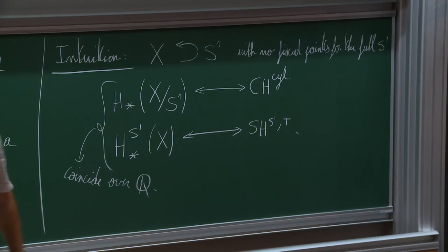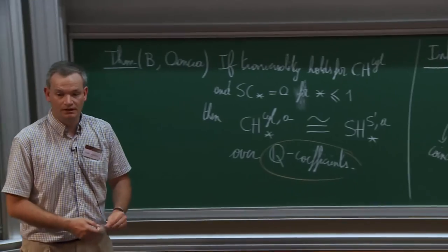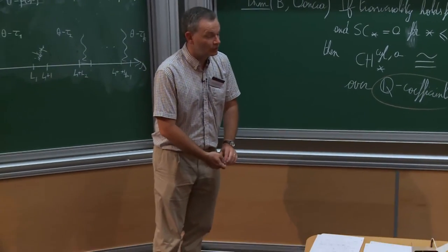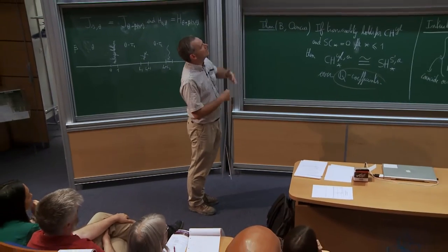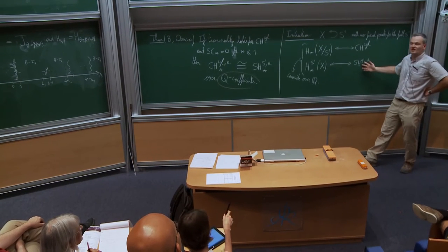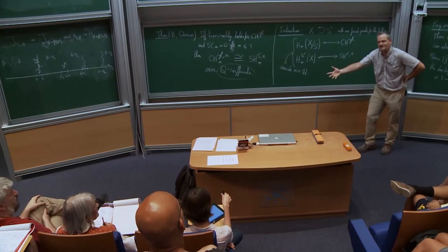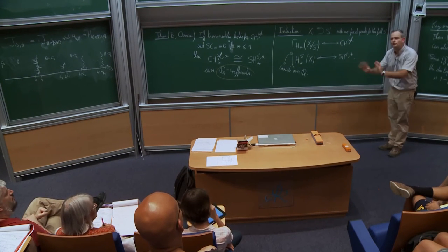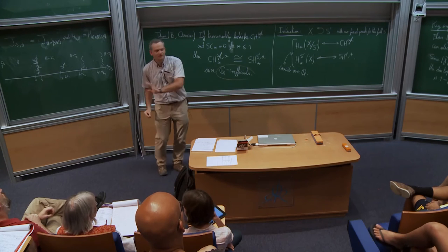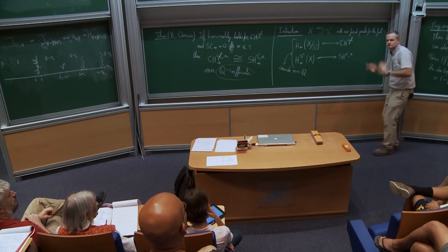The homology of the quotient corresponds philosophically to cylindrical contact homology, while the S¹-equivariant counterpart corresponds to SH^{S¹,+}. Using a pure algebraic topology argument, under the no-fixed-point assumption, these coincide over ℚ but not over ℤ. Regarding the variable U: generators in the complex are tensor products of orbits and powers of U. The complex is a ℤ-module or ℚ-vector space after tensoring with ℚ, but U itself is just carried along formally. In fact, CH_cyl may not even be invariant over ℤ in general.